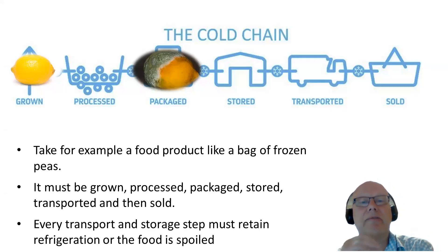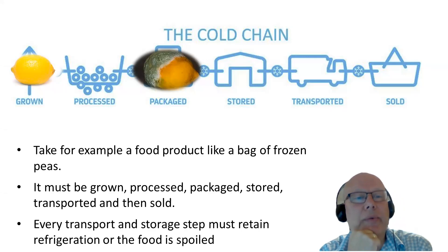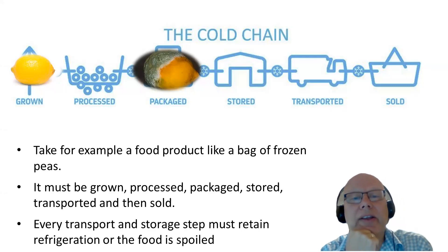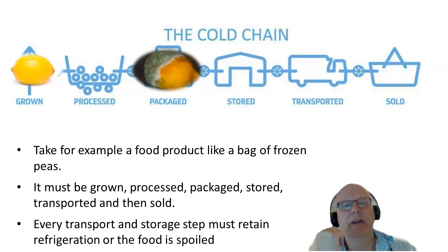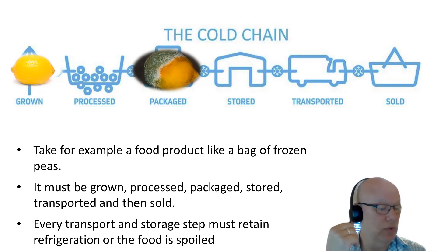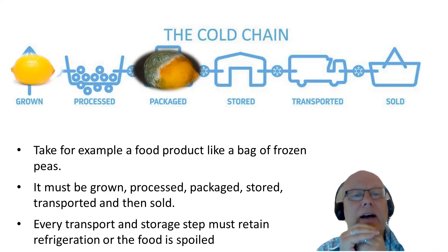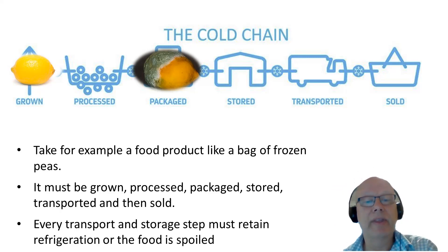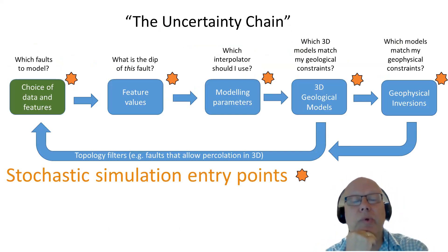To give you a background to what we've been thinking about, here we have the cold chain — the way that we get food from when it's grown to our table. The cold chain is this idea that we have to continuously keep food cold, and that if at any stage in the procedure from processing to packaging to storage to transport to selling it and bringing it home, if the food is allowed to get too hot for too long it goes off. So our happy lemon on the left ends up as a rather nasty-looking furry lemon on the right. The same sort of logic applies when we think about uncertainty in geological systems.